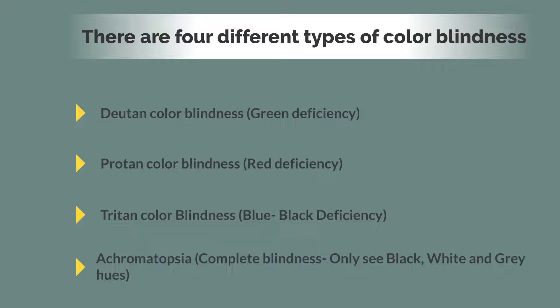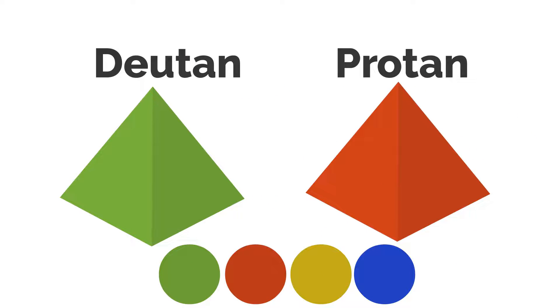Achromatopsia, complete colorblindness, only see black, white, and gray hues. Deuteranomaly and protan are one of the most common types.